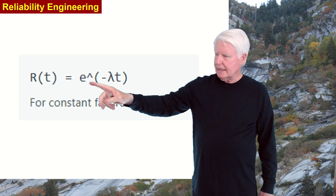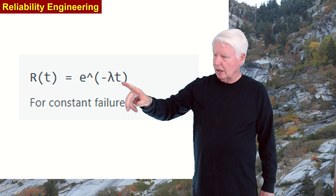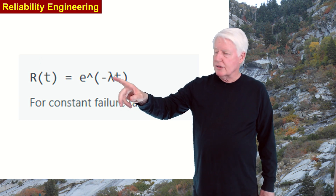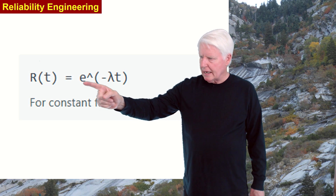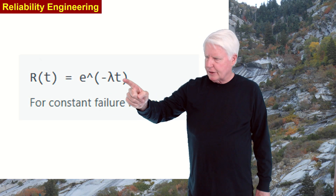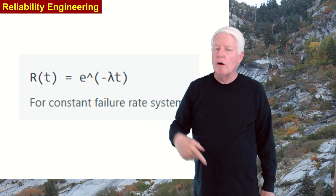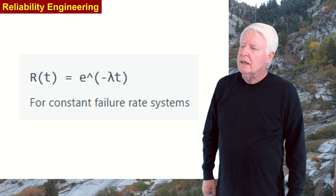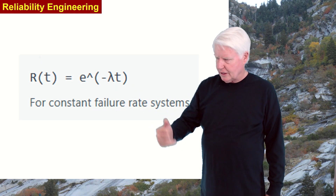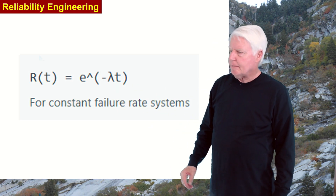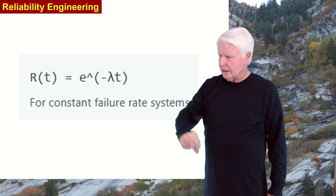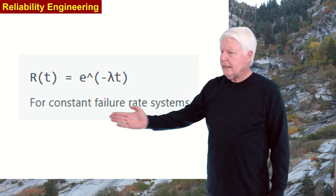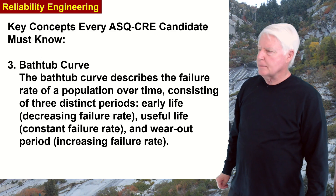Notice the inverse relationship between failure rate and mean time between failure. You could also express the reliability equation as R(t) = e^(−t/MTBF), depending on which value is given in the test question. This formula applies specifically to the constant failure rate period.